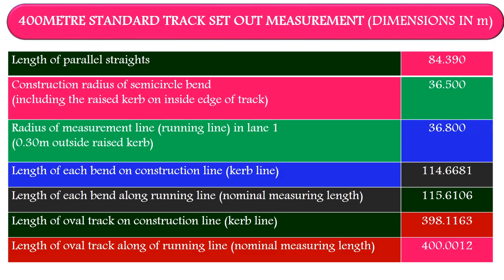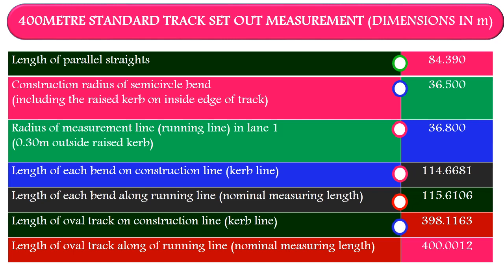Here you can see the 400 meter standard track set out measurements. Length of parallel strides: 84.390 meters. Construction radius of semicircle bend: 36.500 meters. Radius of measurement line in lane 1: 36.800 meters. Length of each bend on construction line: 114.6681 meters. Length of each bend along running line: 115.6106 meters. Length of oval track on construction line: 398.116 meters. Length of oval track along running line: 400.0012 meters.